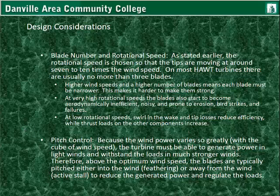Regarding pitch control: because wind power varies greatly with the cube of the wind speed, the turbine must be able to generate power in light wind and withstand loads in much stronger winds. Above the optimum wind speed, the blades are typically pitched either into the wind — called feathering — or away from the wind — called stall — to reduce generated power and regulate loads.